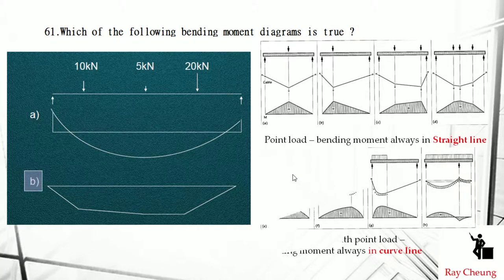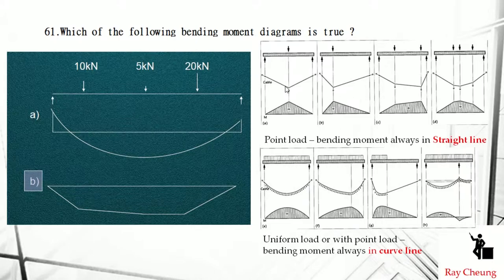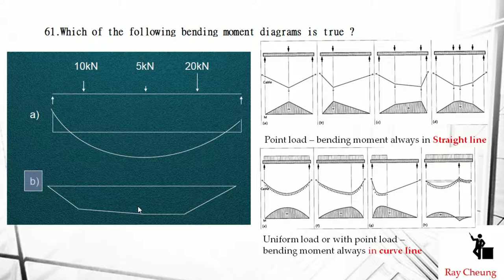If you attended my lesson, you'll understand that bending moment is like a cable — if you hold a cable at both ends and your friend pushes it in the middle, this is the form of cable deformation, which is the bending moment diagram. If you have a uniform loading, the cable forms a curve. If there is only a point load, the cable forms a straight line. But once any uniform load is applied, it must be in curvature. That's why B must be the correct answer.